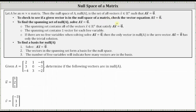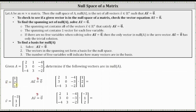Let's take a look at an example. Below we are given matrix A and asked to determine if the following vectors are in the null space of A, which means we need to check A times vector u and A times vector v to see if the products are equal to the zero vector. So for vector u, we have matrix A times vector u, and for vector v, we have A times vector v. Next, we determine the products.